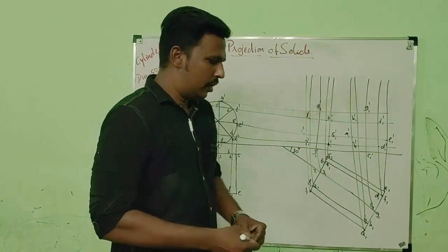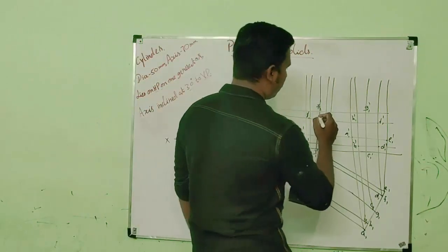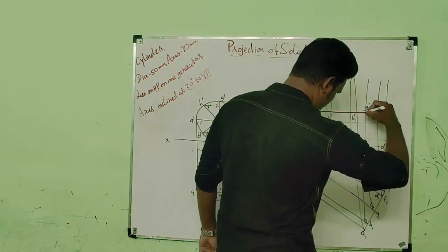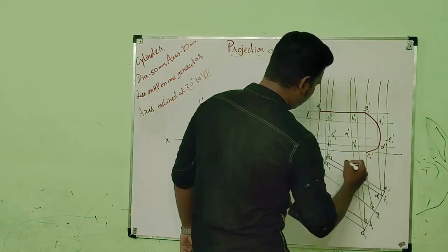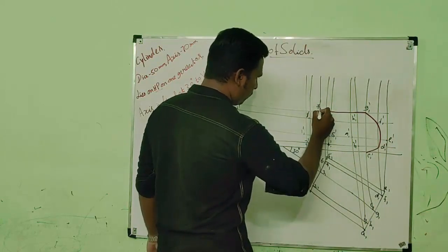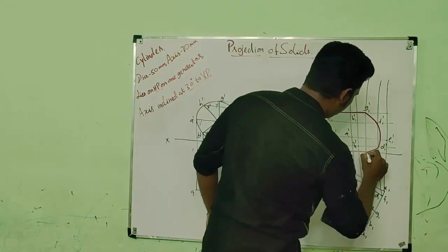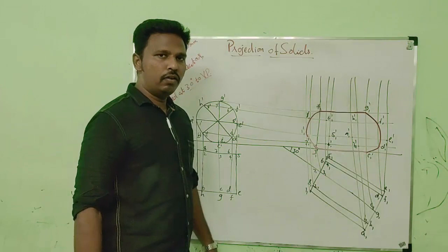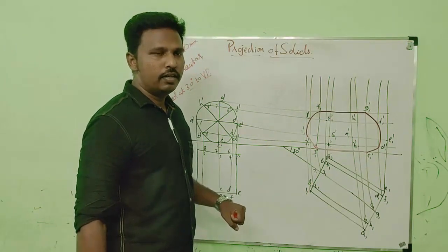Now, after marking all the points, we have to connect the outermost points first. After connecting all the outermost points, we have to see which face is visible and which face is invisible.